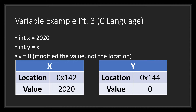This is possible because both X and Y are pointing to two different memory address locations in the application. Now that we have a basic understanding of how the C language handles memory, let's take a look at how Godot handles it.